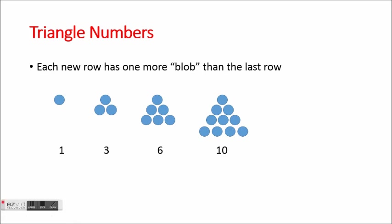Triangle numbers aren't so practical in everyday life, but they do appear in GCSE questions. What we do is build a bigger triangle with each step. The first triangle number is one. Then we add one extra row, giving us three circles in total, so the next triangle number is three. Adding another row gives us six, then ten. The next will be 15, because we add a row of five. In your GCSE exam, they might give you 1, 3, 6, 10, and ask what the next number is.